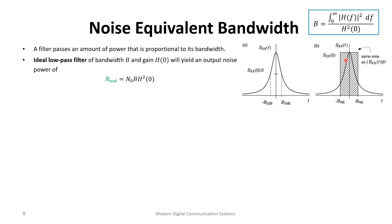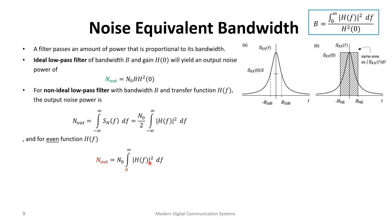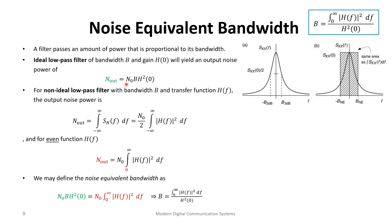For a real filter, the output power is obtained by integrating N₀/2 times |H(f)|² over all frequencies. Since N₀/2 is a constant, it comes outside the integral, leaving the integral of |H(f)|² from zero to infinity (using the even symmetry of a real filter). We equate this to the ideal filter expression N₀·H₀²·B to define the noise equivalent bandwidth B, which tells us what ideal bandwidth gives the same output power.